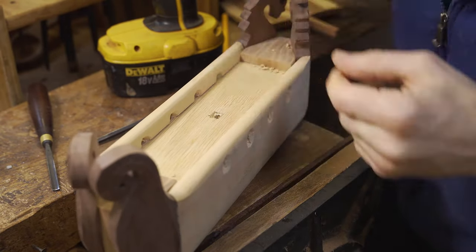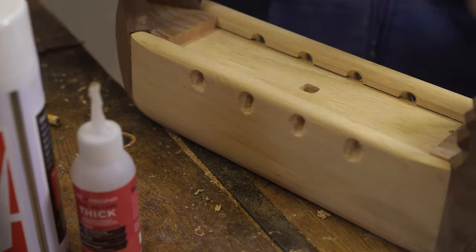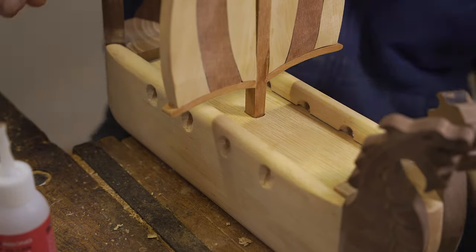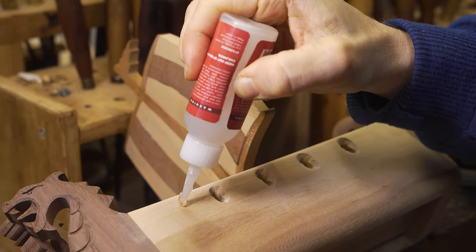So we drill a hole, a pilot hole to get us started, and use the hand gouges to increase the size of that hole to be able to fit the mast through and then superglue it down into position.